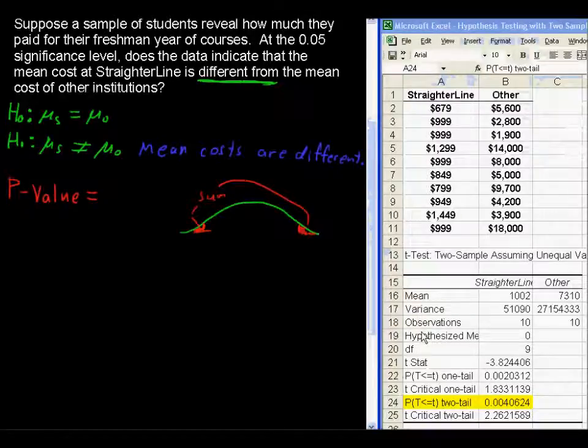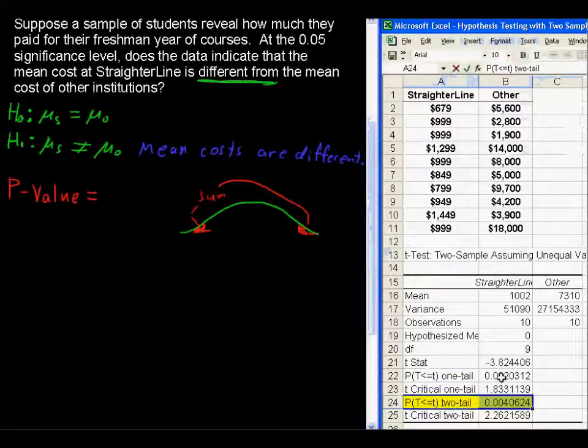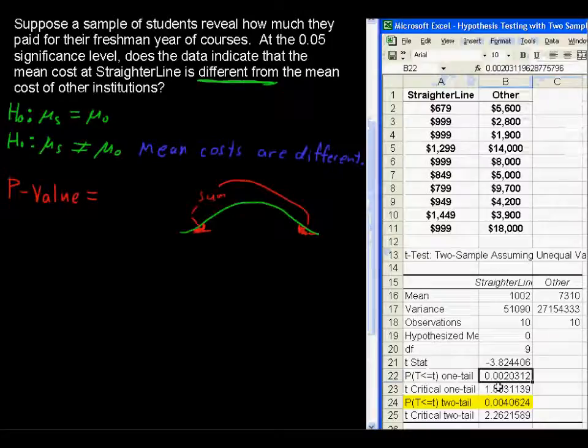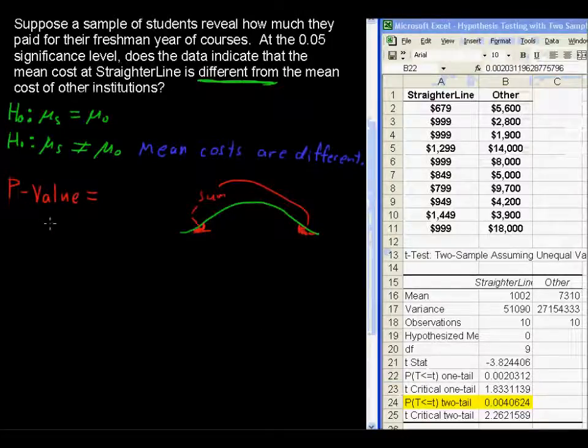If, on the other hand, we were doing a strictly less than or a strictly greater than, then we would choose this one tail p-value. But in this case, we're doing the two tail. So let's write that down. The p-value equals 0.0041, rounding correctly.